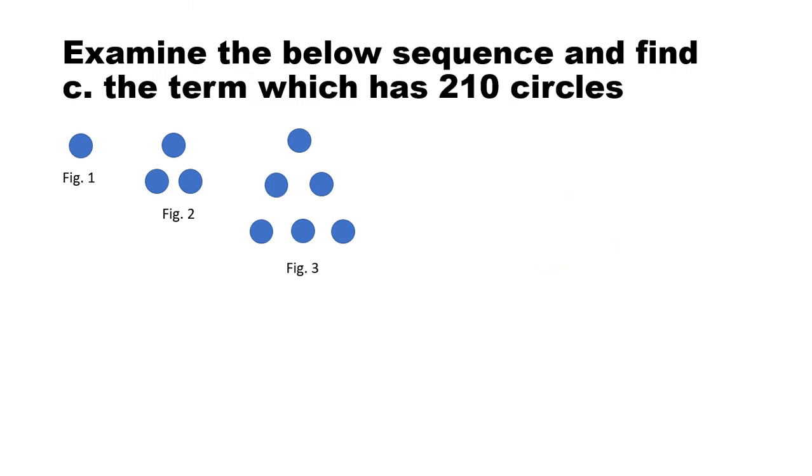Examine the below sequence and find the term which has 210 circles. So this is exactly the opposite of what we've been doing so far. In order to find the term, we don't know which term it is. So let's keep that as n.